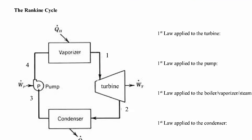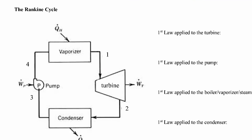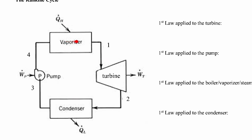Here's a schematic of a typical Rankine cycle. We have the vaporizer — steam generator or boiler — where energy is added via heat transfer to the working fluid, which then goes into a turbine where it expands and we extract power. Then it goes into a condenser where we offload energy to the surroundings, then through the pump and we repeat the cycle. We have states 1, 2, 3, and 4. We analyze these by drawing control volumes around individual components and applying the first law.